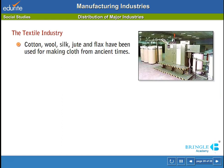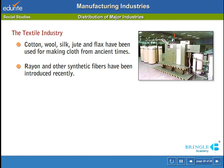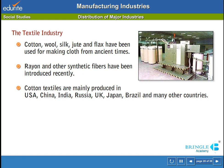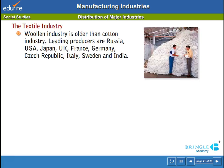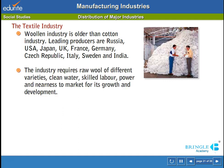The textile industry: cotton, wool, silk, jute and flax have been used for making cloth from ancient times. Rayon and other synthetic fibres have been introduced recently. Cotton textiles are mainly produced in USA, China, India, Russia, UK, Japan, Brazil and many other countries. In recent years, the industry has been migrating from temperate zones to cotton-growing areas which offer cheaper labour and power. The woolen industry is older than the cotton industry. Leading producers are Russia, USA, Japan, UK, France, Germany, Czech Republic, Italy, Sweden and Germany. The industry requires raw wool of different varieties, clean water, skilled labour, power and nearness to market.